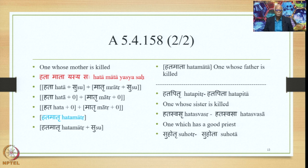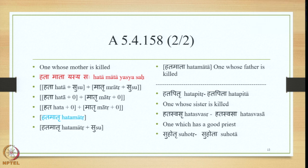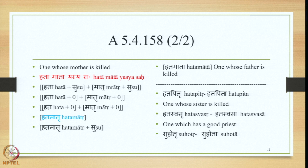Adding the suffix Su to Hatamatru and processing further according to the Ajanta Pullinga section of the Shedlingi Prakarana, we get the form Hata Matta as the Prathama Ekavachana. Similarly, for 'one whose father is killed,' the Samasa is Hatapitru and the Prathama Ekavachana is Hatapita. For 'one whose sister is killed,' we get Hataswasru as the Samasa and Hataswasa as the Prathama Ekavachana. Similarly, 'one which has a good priest' gives Suhotru as the Samasa and Suhota as the Prathama Ekavachana.